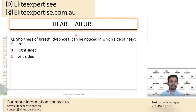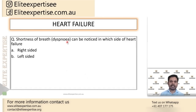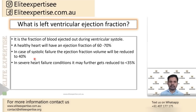Quick review: Shortness of breath (dyspnea) is a symptom of left-sided heart failure. Peripheral edema, especially ankle swelling, is a symptom of right-sided heart failure. Now we need to understand an important concept — ejection fraction — because it is relevant when studying medications such as digoxin.